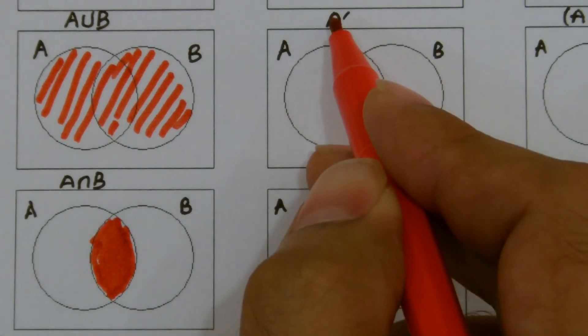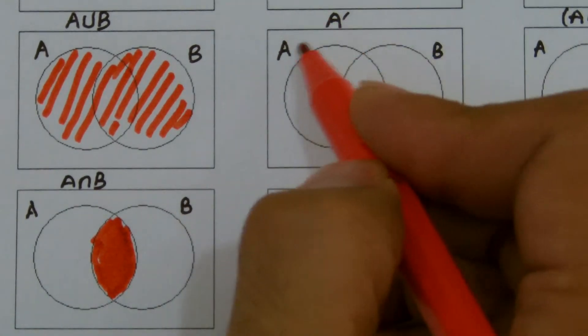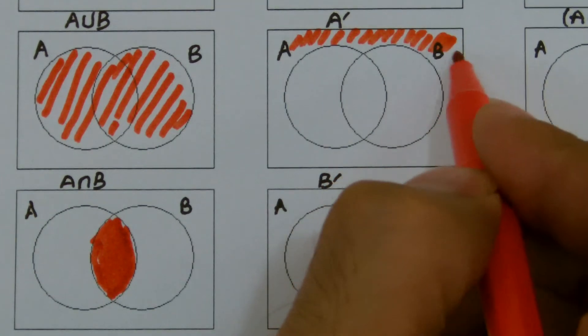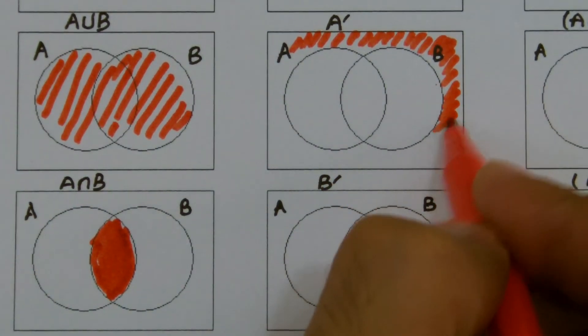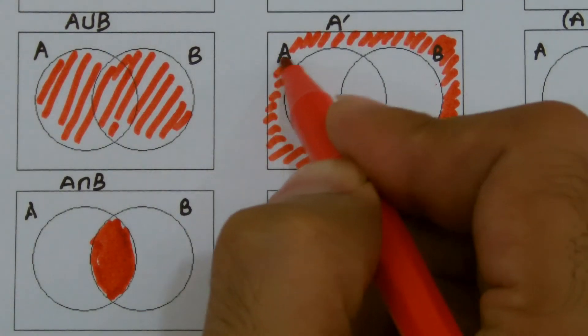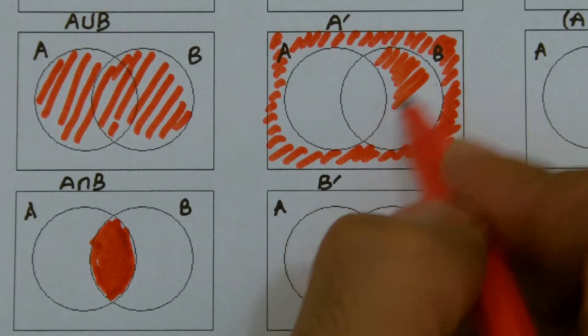So if I'm looking for A complement, then it means everything but not A. So I would shade everything but not A. So initially, I'll shade everything outside both A and B and ultimately A will not be included. So I would shade this part of B as well.